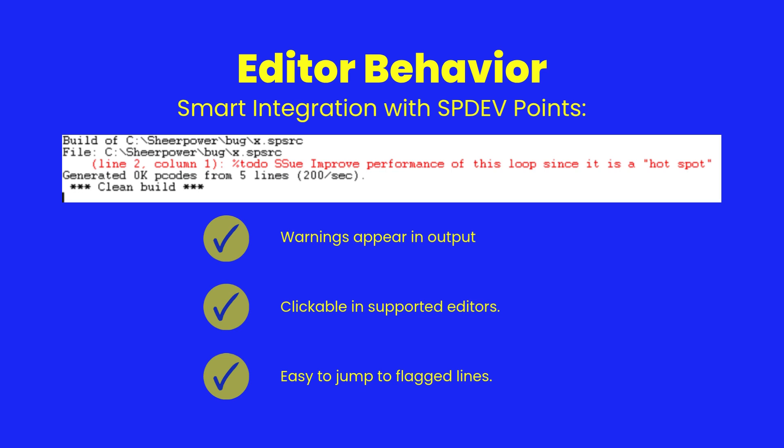When you compile code containing percent TODO directives, SheerPower shows soft warnings in the output window. These don't stop your build, but they are visible in editors like SP Dev or Visual Studio Code. Each percent TODO becomes a clickable link — just one click takes you directly to the exact line in your code. No searching, no scrolling, just instant navigation.